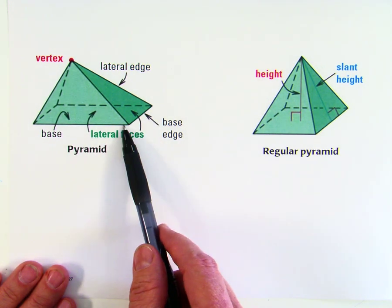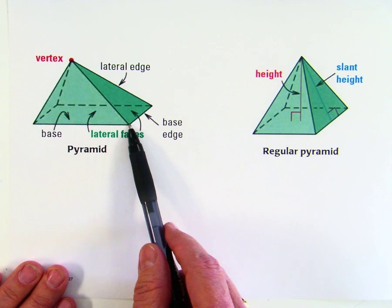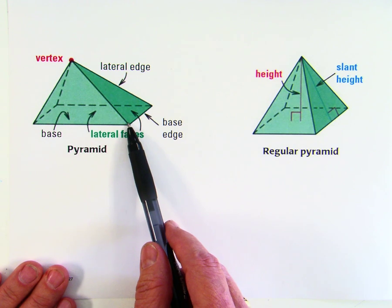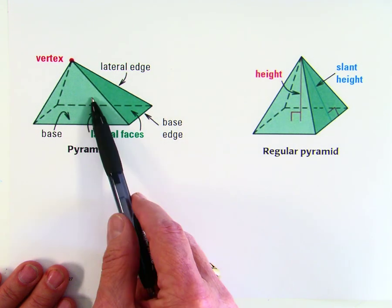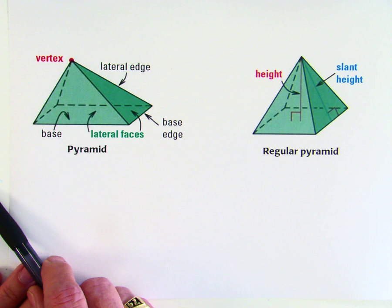The sides or edges of the base are called the base edges. The edges that connect the triangles are the lateral edges.